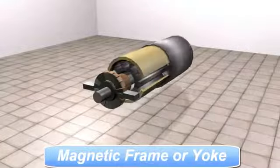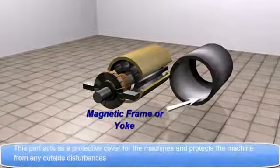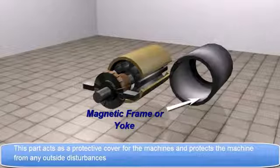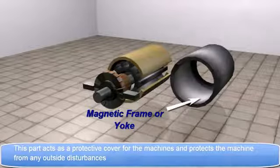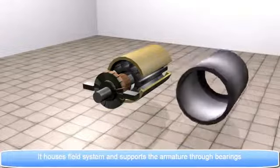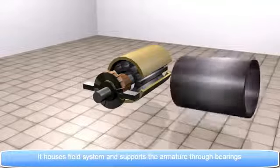Magnetic Frame or Yoke. This part acts as a protective cover for the machines and protects the machine from any outside disturbances. It houses field system and supports the armature through bearings.